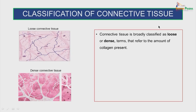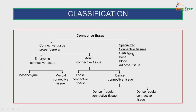Coming to the classification of connective tissue: we have loose connective tissue and dense connective tissue. The loose and dense terms refer to the amount of collagen present. The general connective tissue is divided into embryonic connective tissue and adult connective tissue. The embryonic connective tissue is divided into mesenchyme and mucoid connective tissue. The adult connective tissue includes loose connective tissue and dense connective tissue, which is further divided into dense irregular and dense regular connective tissue. The specialized varieties include cartilage, bone, blood and adipose tissue.